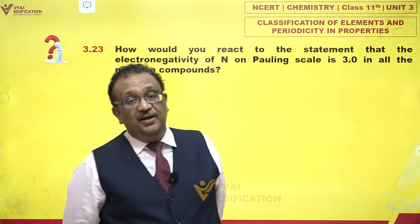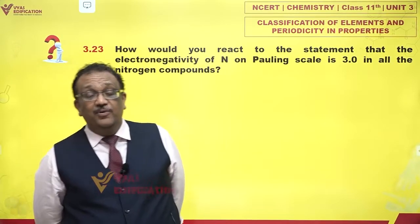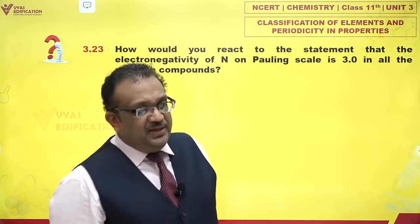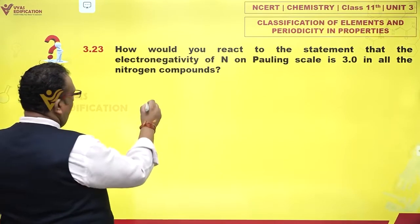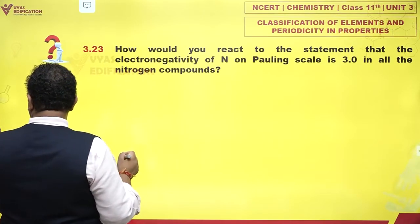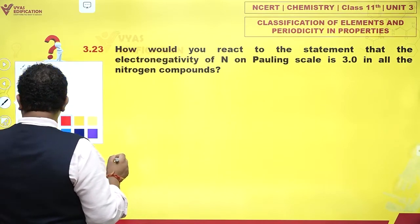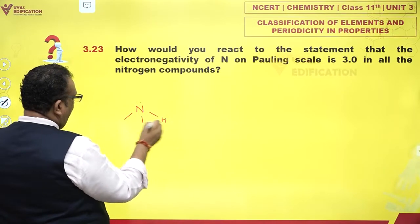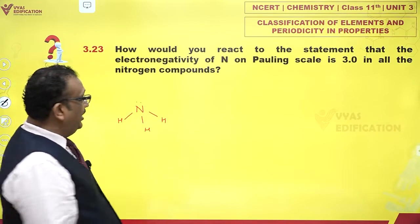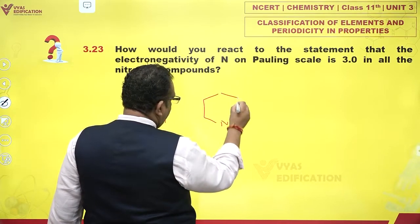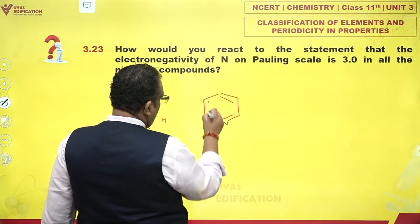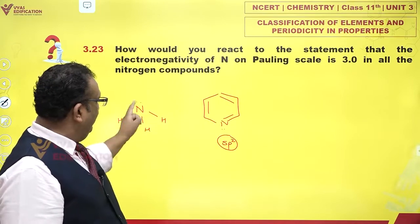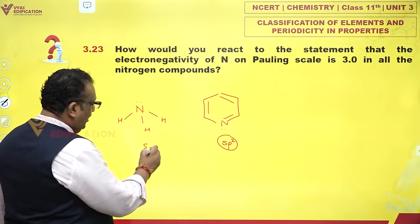But please understand that nitrogen is differently hybridized in different molecules. For example, if you have ammonia, it contains nitrogen which is SP3 hybridized. Now, the same nitrogen, if it appears in pyridine — just take a look — this is SP2 hybridized nitrogen. So would this nitrogen have the same electronegativity as SP3 hybridized nitrogen in ammonia?